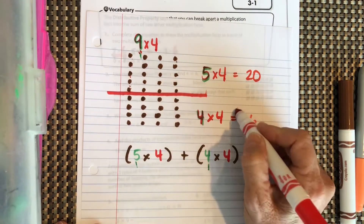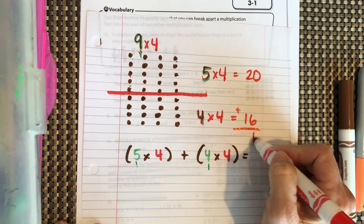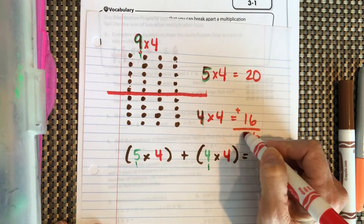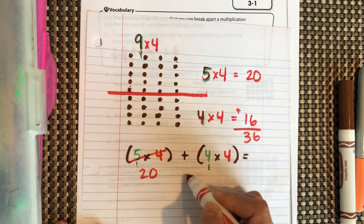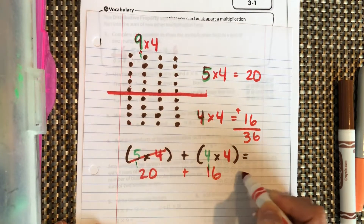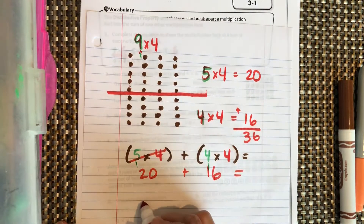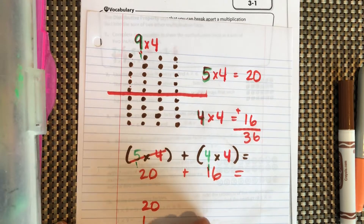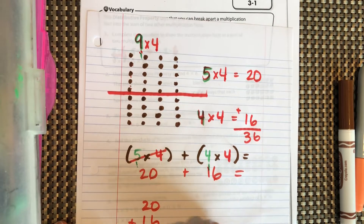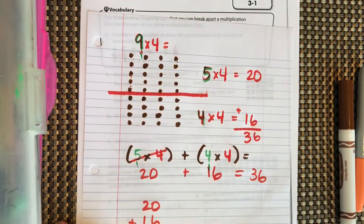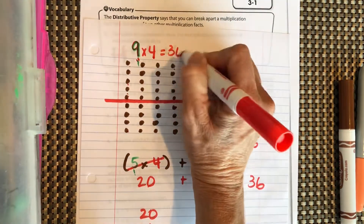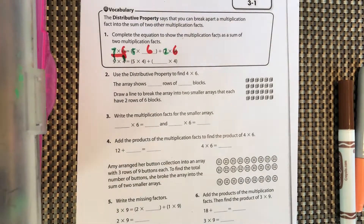Five groups of 4 equals 20, and 4 groups of 4 equals 16. Then we add them together: 20 plus 16 equals 36. So 9 times 4 equals 36.